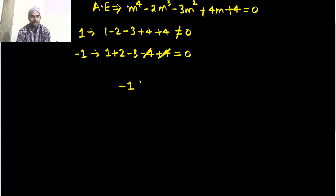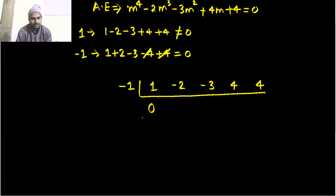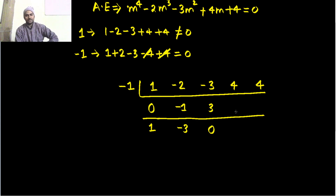First write the coefficients: coefficient of m power 4 is 1, coefficient of m power 3 is minus 2, coefficient of m power 2 is minus 3, coefficient of m power 1 is 4, and the constant term is 4. Write 0 below the first one and now add — you will get 1. Multiply this 1 with minus 1 so you are getting minus 1. Write that here, again add — you will get minus 3. Again multiply this minus 3 with that minus 1, you are getting 3.